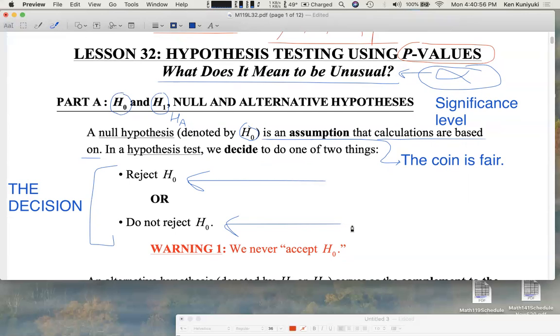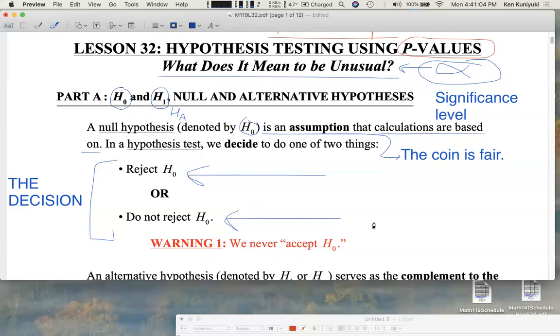In some ways, you can sort of think of this as guilty versus not guilty in a jury trial. We'll talk more about that. Now, in a jury trial, you never say that a defendant is innocent. There might be some evidence against a defendant, but you never say in a jury trial this defendant is innocent. Yes, there is a presumption of innocence, that's a bit different. But it is never a verdict in a jury trial that you say that someone is innocent. Likewise, we will never accept the null hypothesis. We will never accept definitively that the coin is fair.